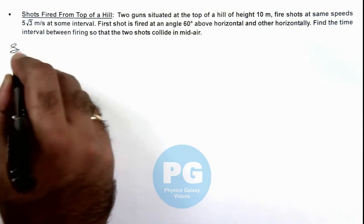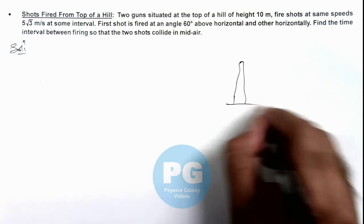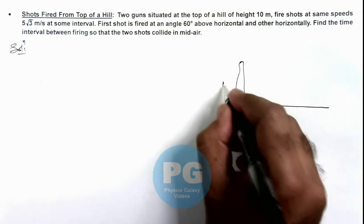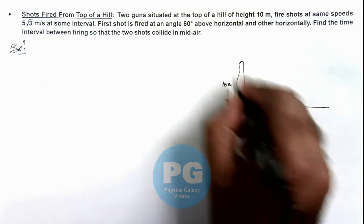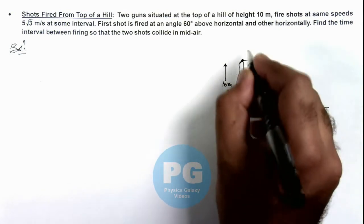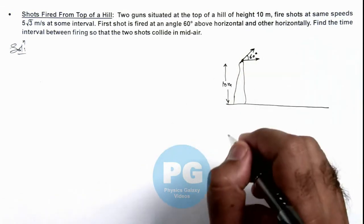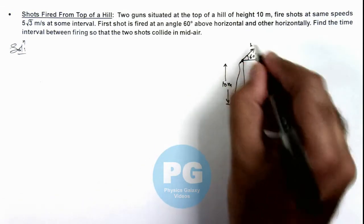If we draw this situation, say if this is a hill, and the height of hill is 10 meter above the ground from where 2 shots are fired, 1 is in horizontal direction, and 1 is at an angle 60 degree with respect to horizontal. Say this is 1 and this is 2.